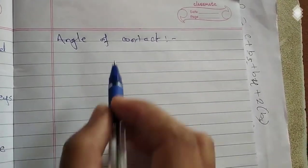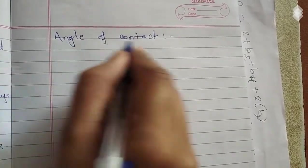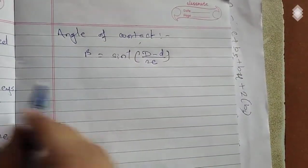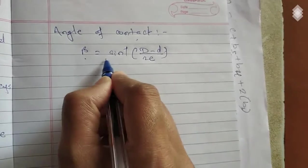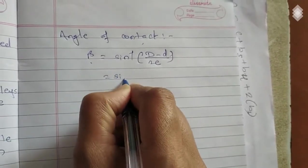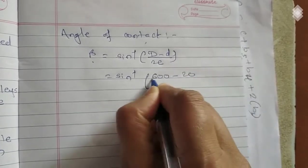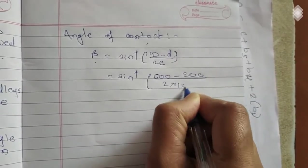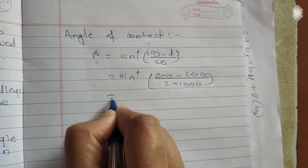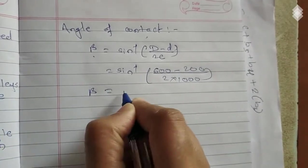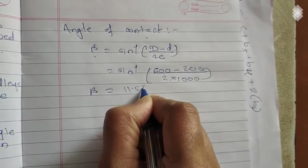Now to use the formula of limiting tension, first we need to calculate angle of contact. Before that, first calculate beta. Beta equals sin inverse of capital D minus small d divided by 2c. So here we are going to put in the value and we get the value of beta, that is equal to 11.53 degrees.